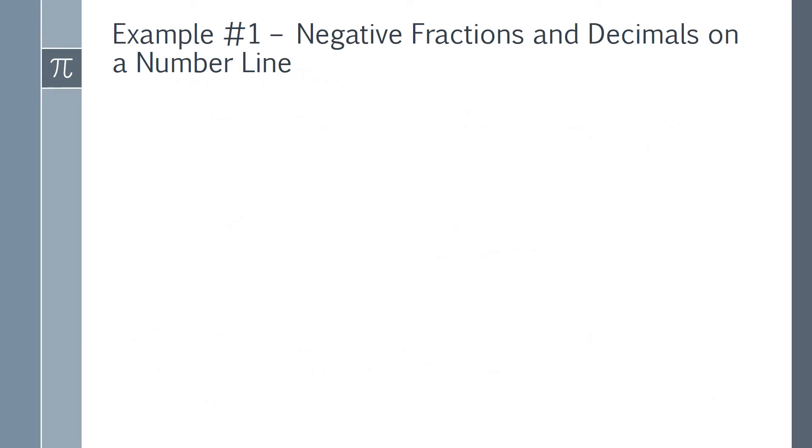Example number 1. Negative fractions and decimals on a number line. Part A. Graph 4 fifths and its opposite.